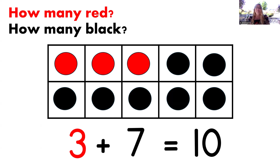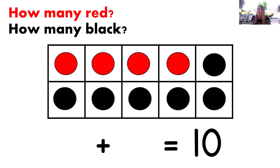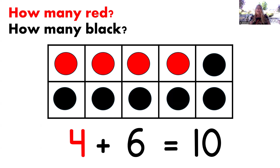How many dots are red now? That's right, four. And how many dots are black? Yes, six. Now let's read that equation: four plus six equals 10. Wonderful.